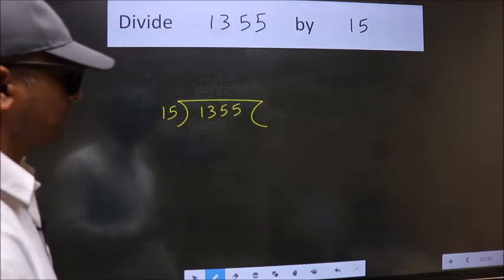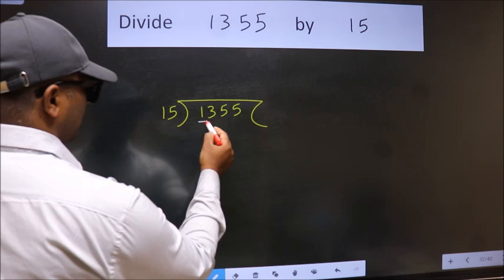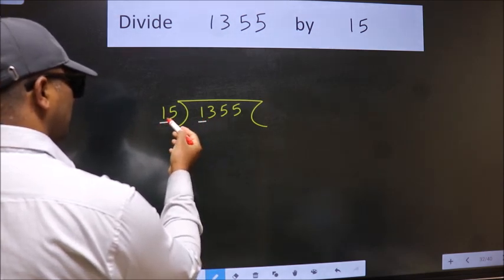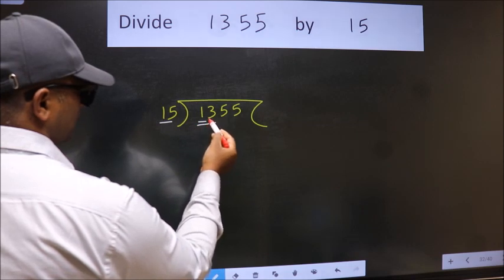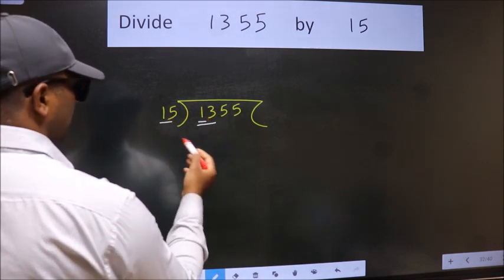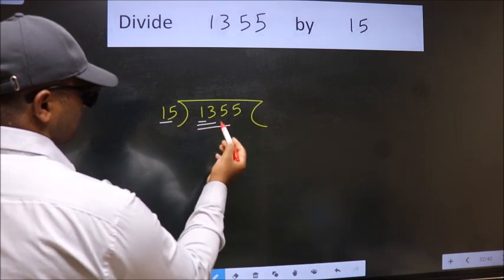Next, here we have 1. Here 15. 1 is smaller than 15, so we should take two numbers, 13. 13 is still smaller than 15, so we should take three numbers, 135.